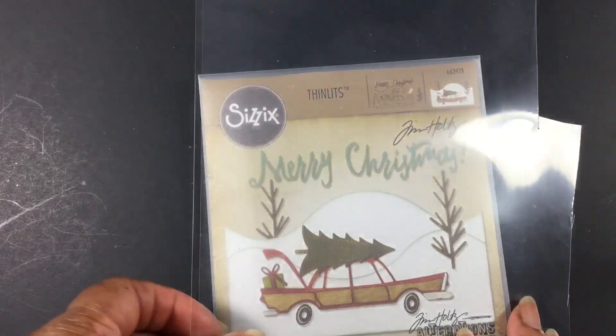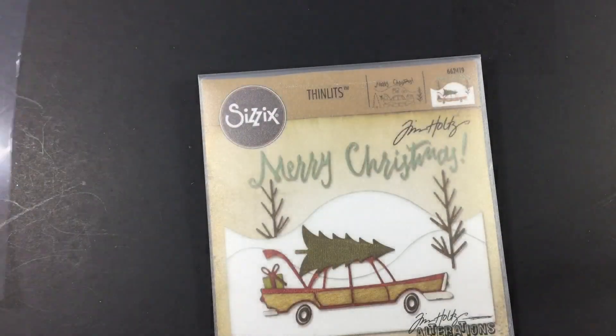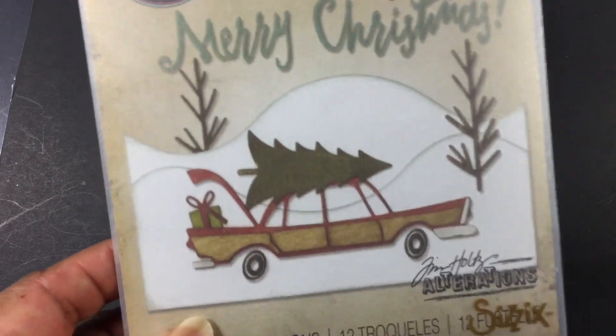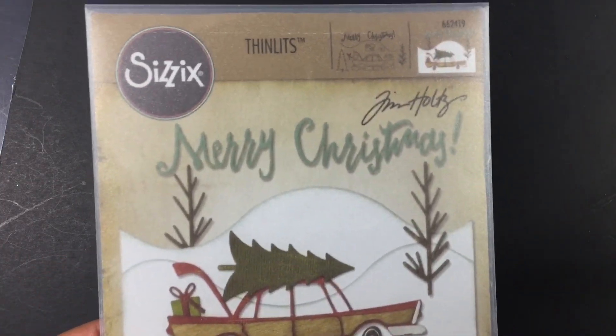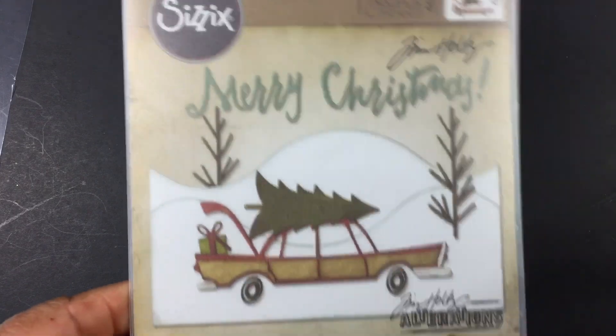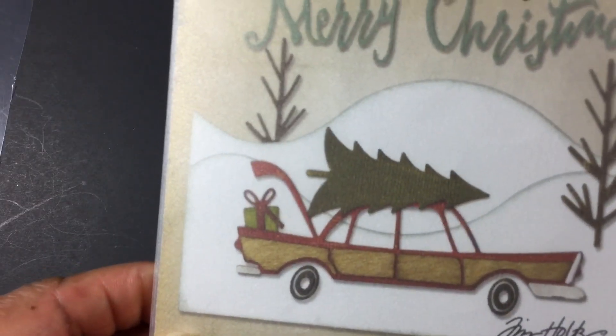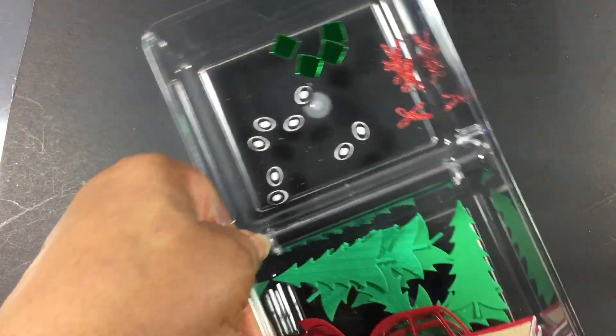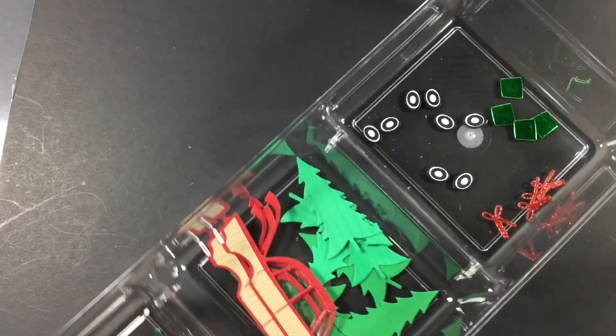I also used a piece of acetate. This is the car with the wheels that I'm using - it's Tim Holtz Home for the Holidays. That is the car I created. As you can see here, I cut out enough pieces for five cars.